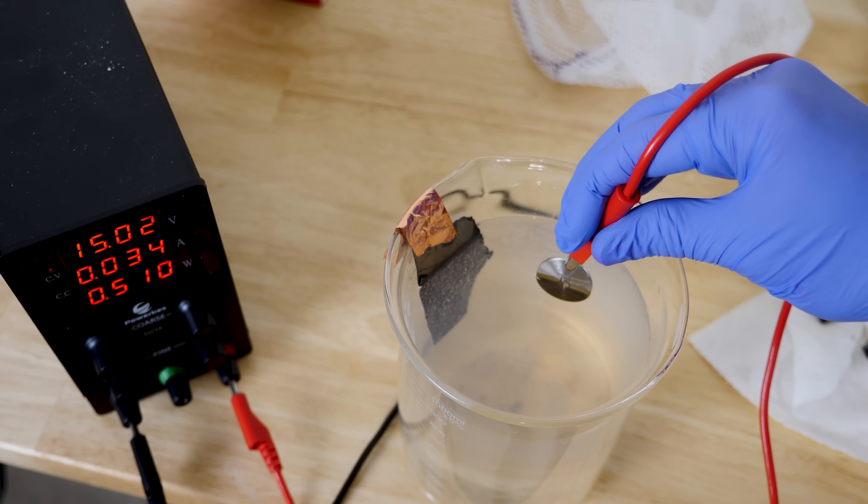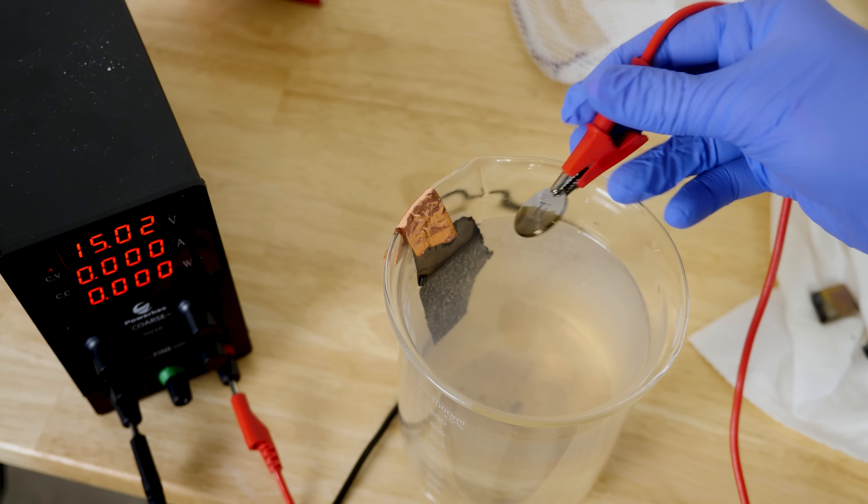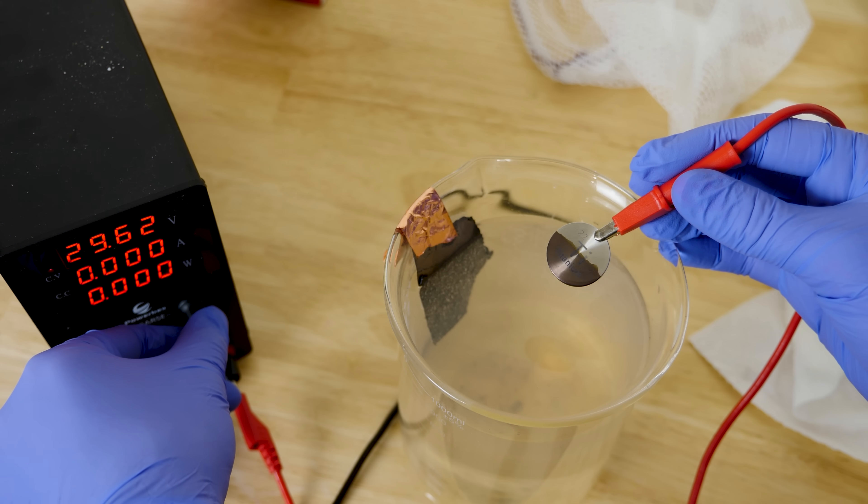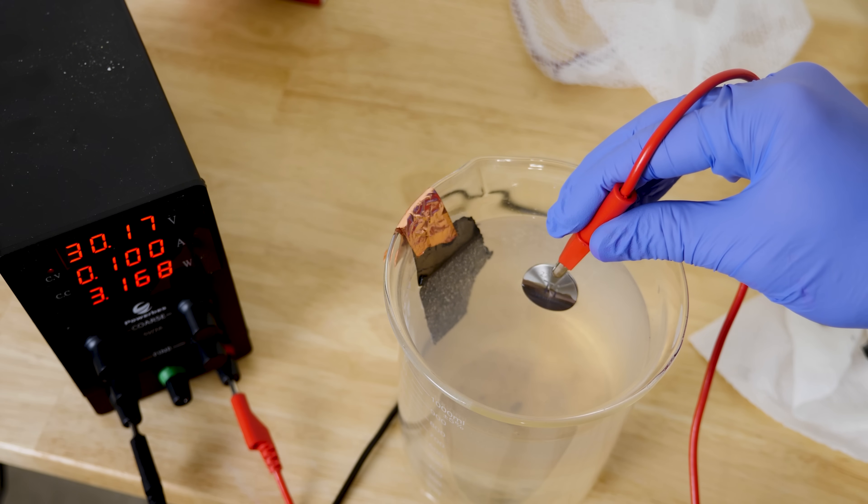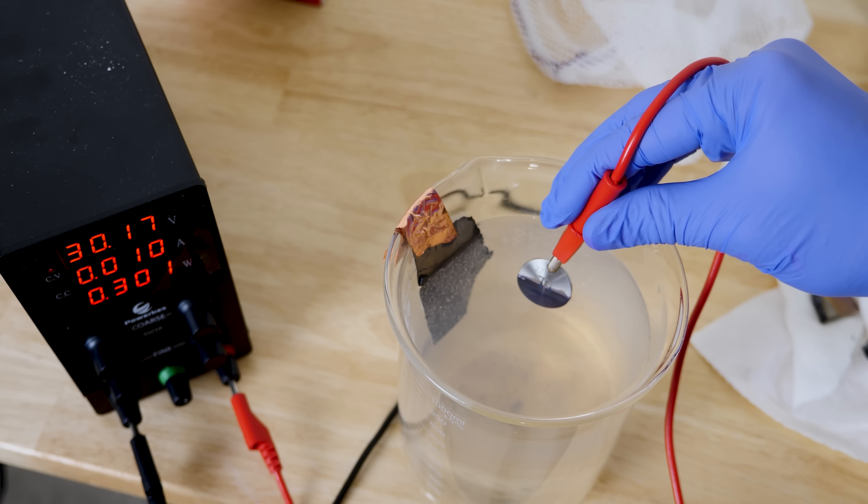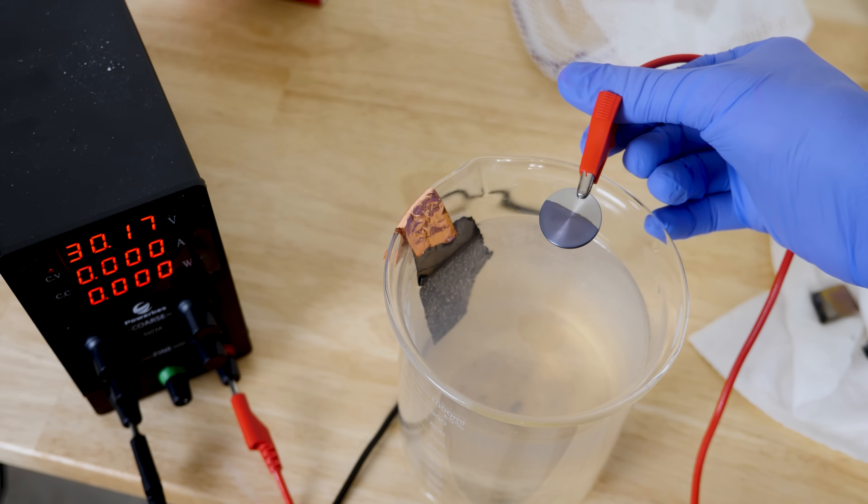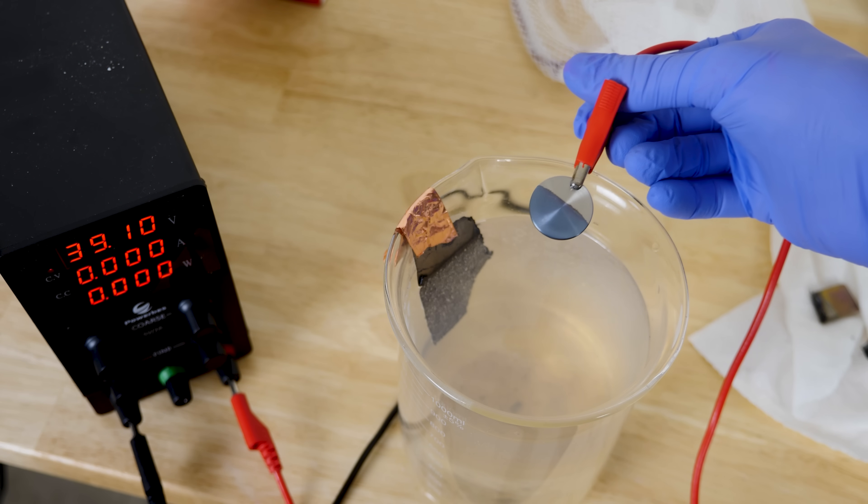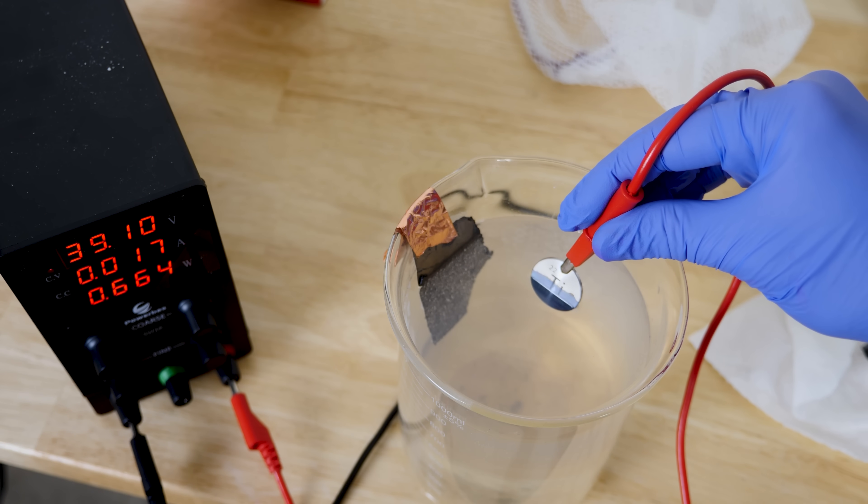Go 15 volts. That makes it a little bit darker. 30 volts, it should start to turn a little bit blue. Look at 40 volts. That's a pretty color.